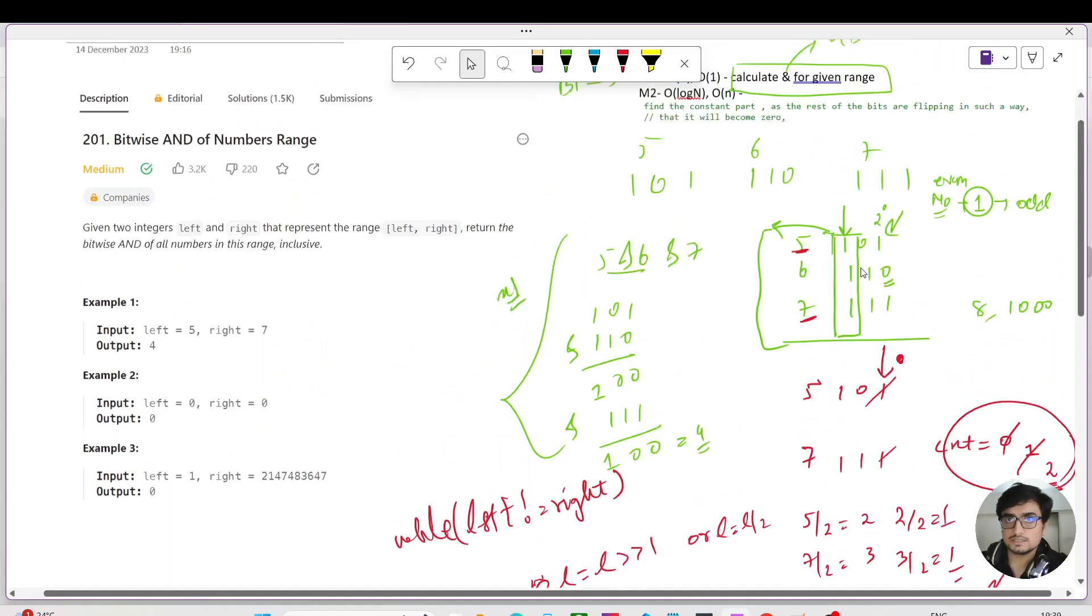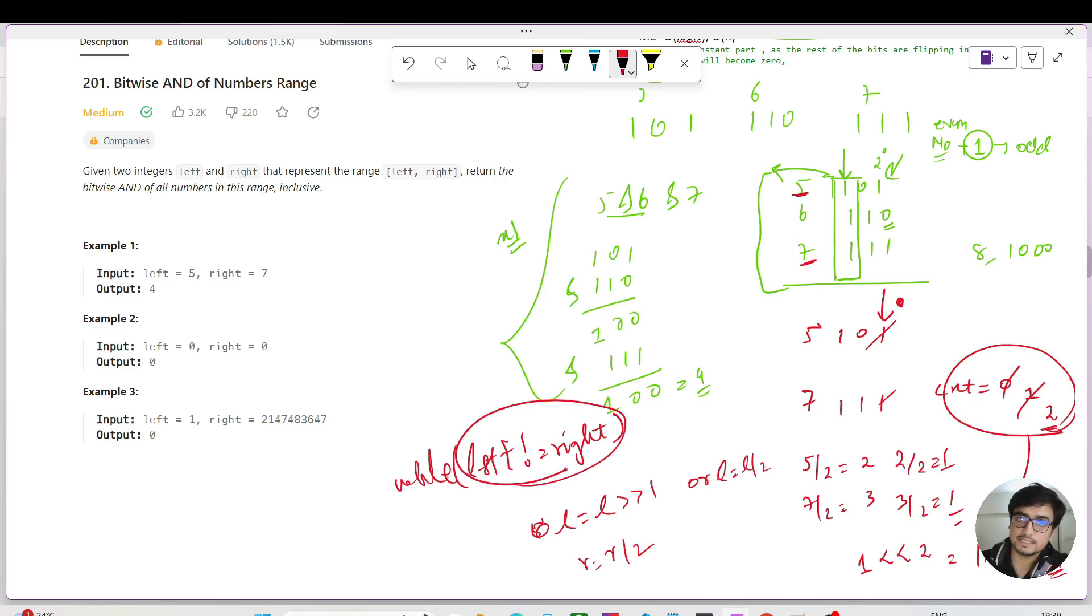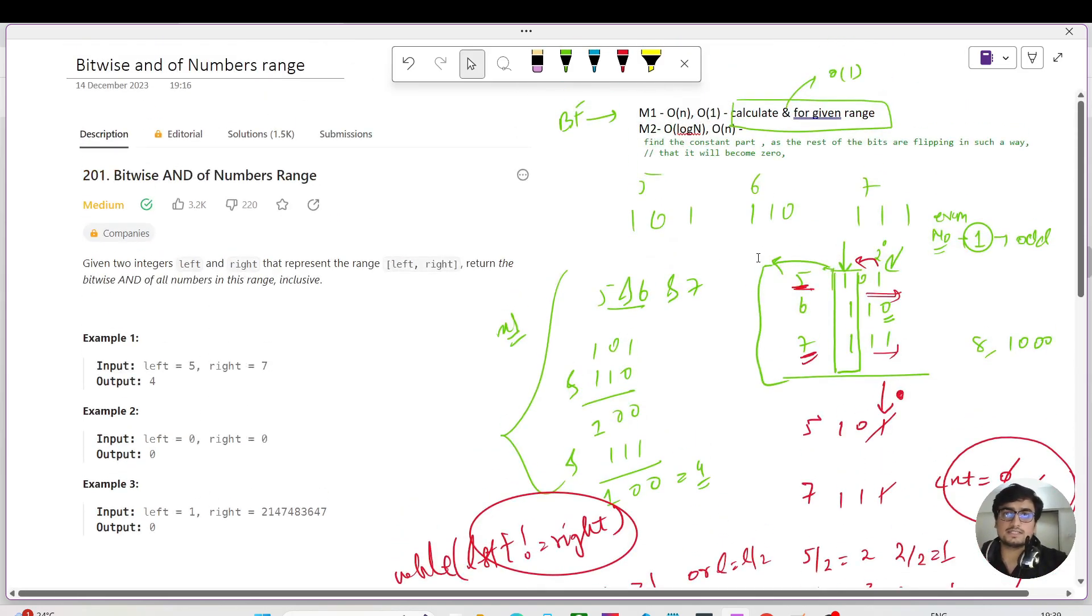The logic is: once your left and right are equal, all the bits before that position will be the same. You take the weightage for the number of times you've traversed from the rightmost bit until left equals right. For the first time solving this, it might be difficult to digest the logic, but spend some time with this question, try running more test cases, and you'll eventually get it.